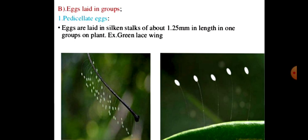Eggs laid in groups — first type: pedicillate eggs. Eggs are laid in a silken stalk of about 1.25 mm in length, in groups on plants. Example: green lacewing.